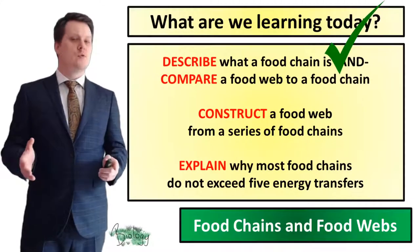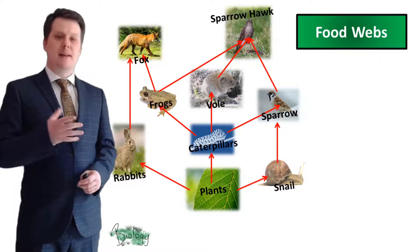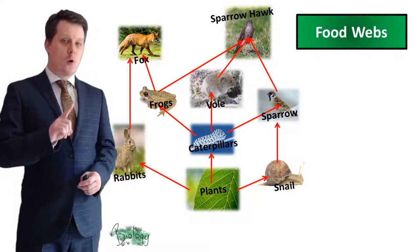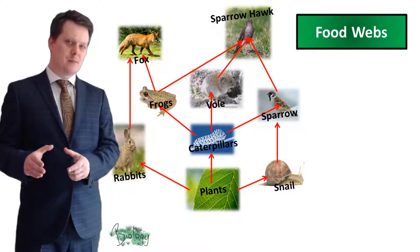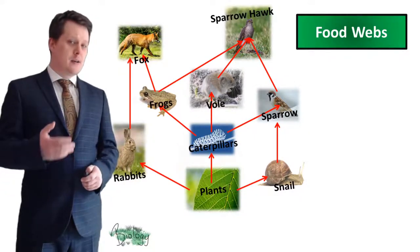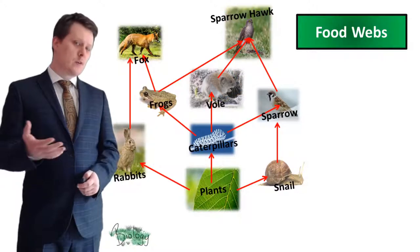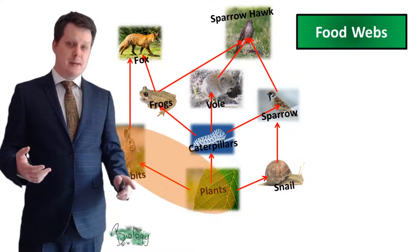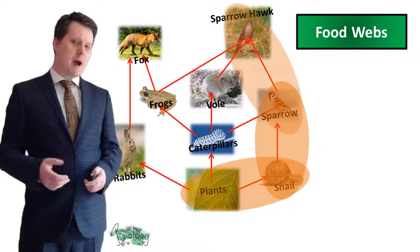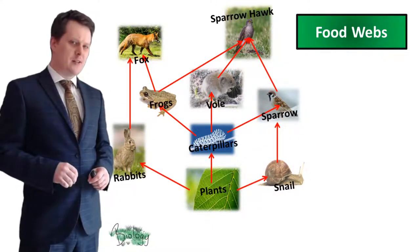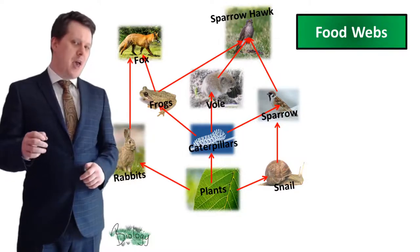Now we've described a food chain, let's compare it to a food web. In an ecosystem there are many more organisms, and many consumers prey on more than one organism. A food web is a combination of all food chains in an ecosystem. For example, plants are eaten by rabbits (eaten by the fox), by snails (eaten by the sparrow, then sparrowhawk). Every food chain in a food web must start with a producer and end on an apex predator — an organism not eaten by anything else.